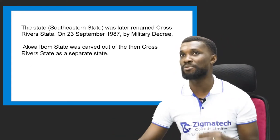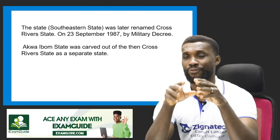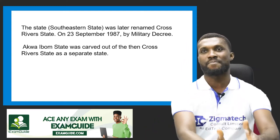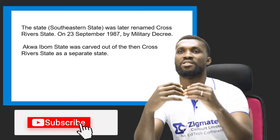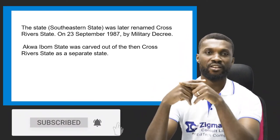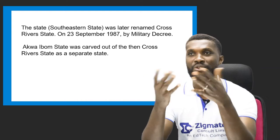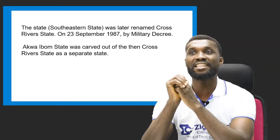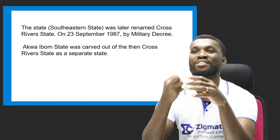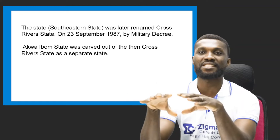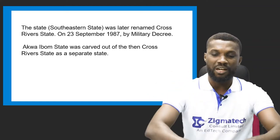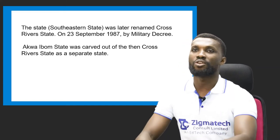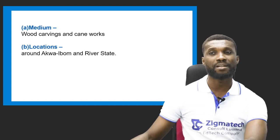The Anang, Efik, Ekid, Oron, and Ibeno share personal names, culture, and tradition with the Ibibio, and speak closely related varieties of the Ibibio language. The state the Ibibio people fall under was later renamed Cross River — with Calabar as its capital territory — on 23rd September 1987 by military decree. Akwa Ibom state was subsequently carved out of Cross River as a separate state.